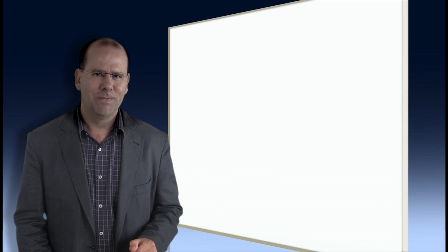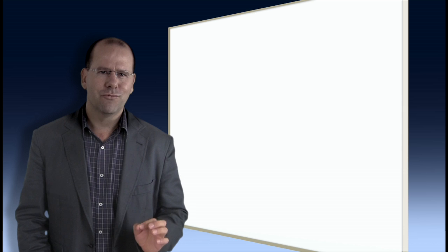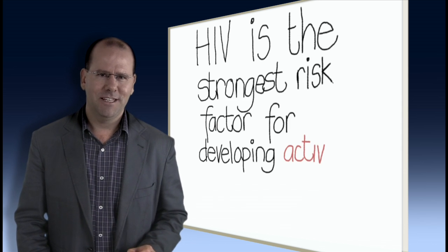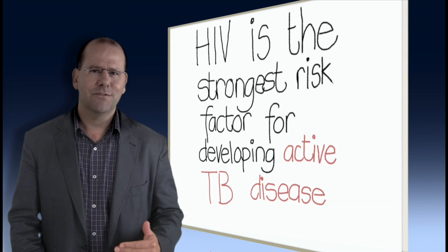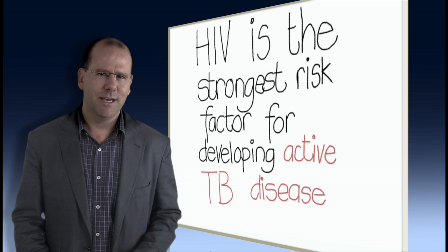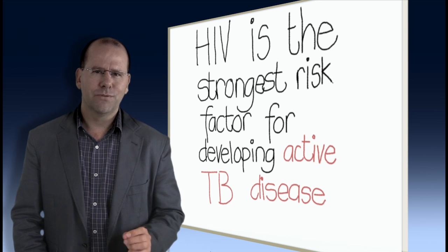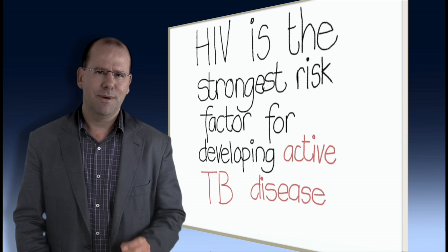Fact number nine. HIV is the strongest risk factor for developing active TB. In 2011, approximately 430,000 deaths from tuberculosis occurred amongst people living with HIV. That's a quarter of the estimated 1.7 million deaths from HIV in that year.